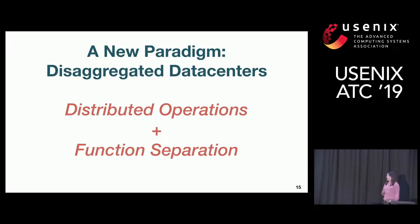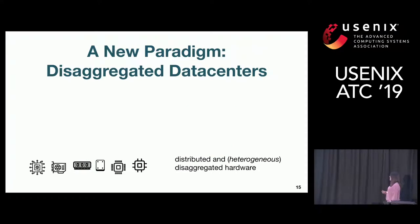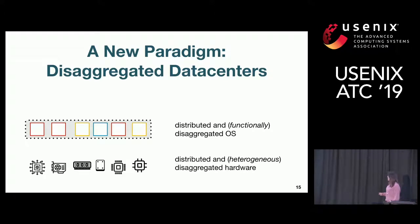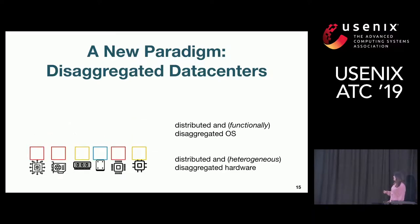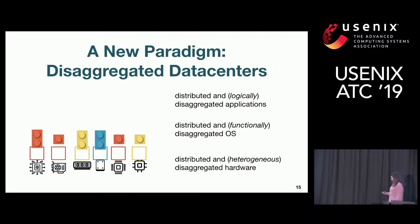With all these trends and limitations, what I think we should do is move data centers to a new paradigm — what I call disaggregated data centers. We should admit that operations are distributed and functions are essentially separated. What we are proposing is to do this from the hardware all the way to the application: distribute and disaggregate hardware devices, then also distribute and functionally disaggregate the core OS, run each separate OS piece on the hardware, and applications — which are already distributed and disaggregated — can now just run on these disaggregated hardware and OS easily.